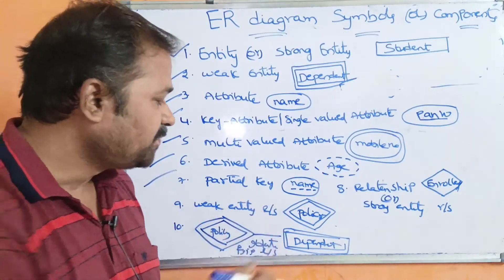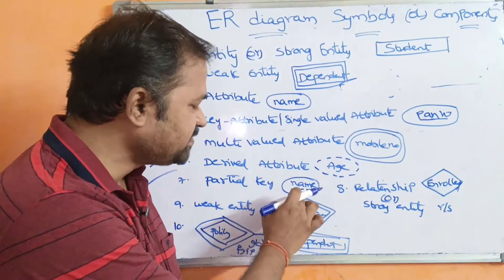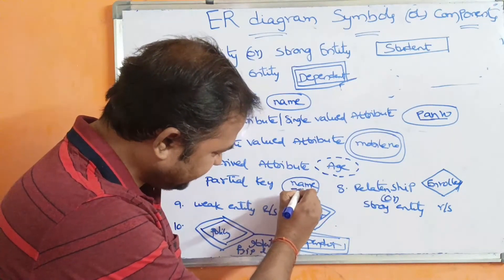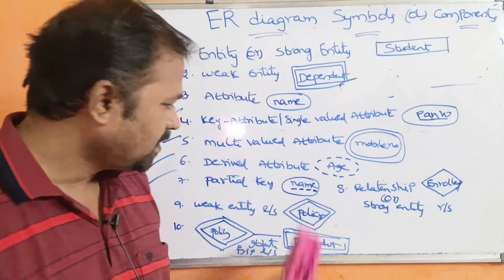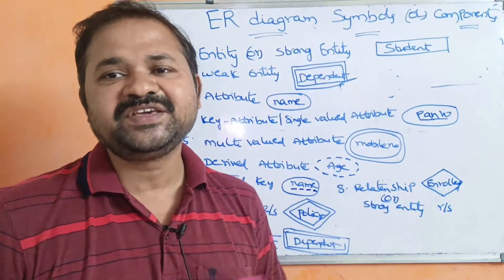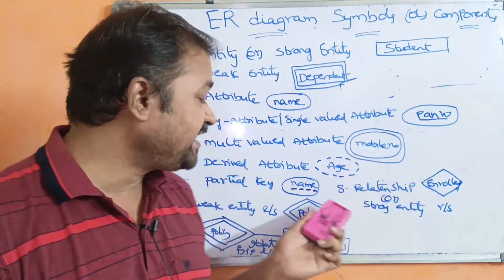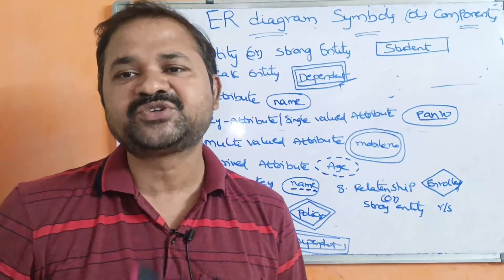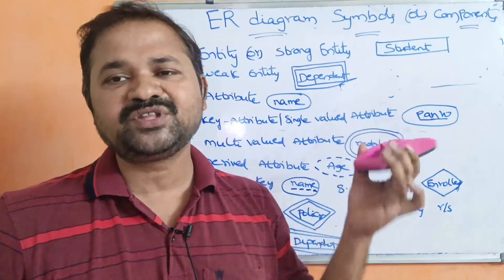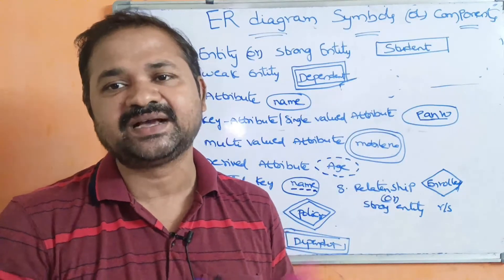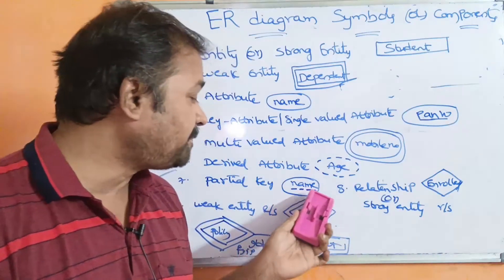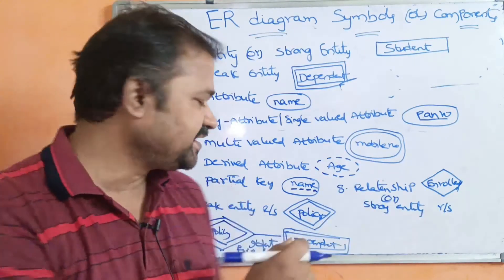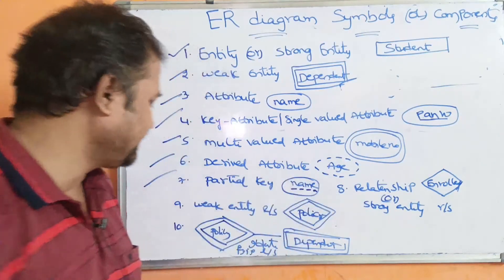Next is the partial key. Partial key is represented by an ellipse symbol with the attribute name underlined using a dashed line. Partial key is used in a weak entity. Weak entity has some attributes, and one of those attributes is the partial key. We know that a weak entity doesn't use any regular key field, but it uses a partial key, which is indicated by the dashed underline.